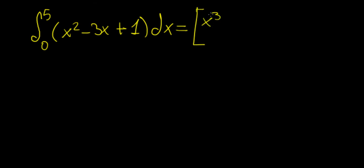So this is going to be x³/3 - 3x²/2 + x from 5 to 0, and this should come to 55/6.